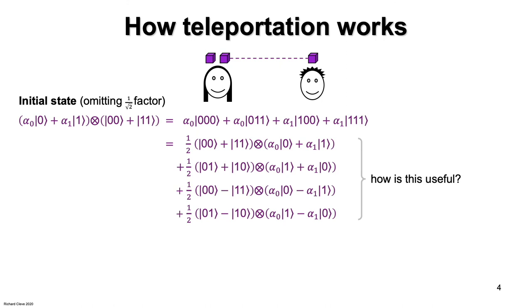But it's still useful to look at the state this way because let's look at the first line of the four line expression. In that line, Alice's two qubits are in a bell state and Bob's qubit is in the state that Alice wants to teleport. So if that were the state, then they would be done.